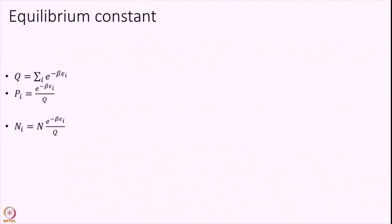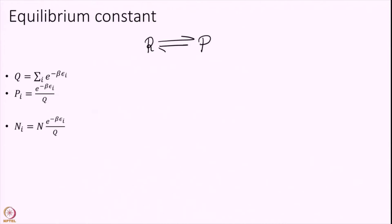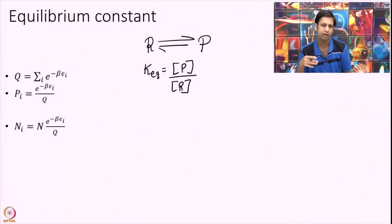So, what we are really trying to calculate: let us imagine I have a reaction with some reactant and some product. I want to calculate the equilibrium constant, which will be given by the concentration of products divided by the concentration of reactants. Of course, if you have stoichiometric coefficients you can put those in as well. The question is: how do I relate it to partition functions?